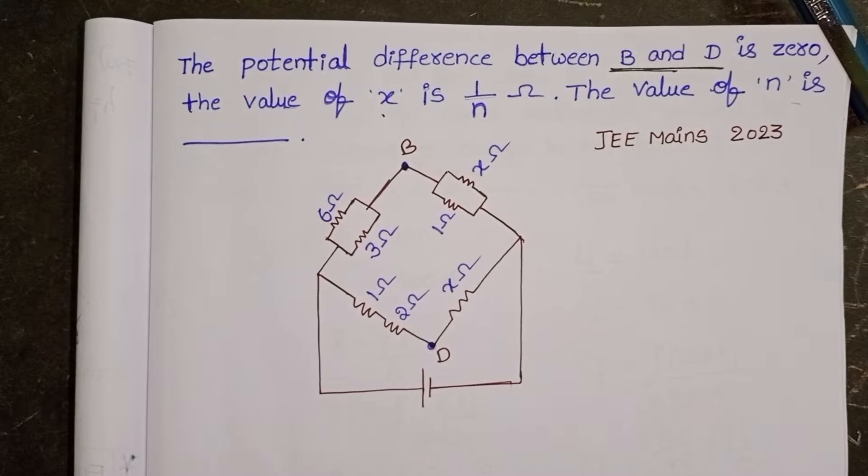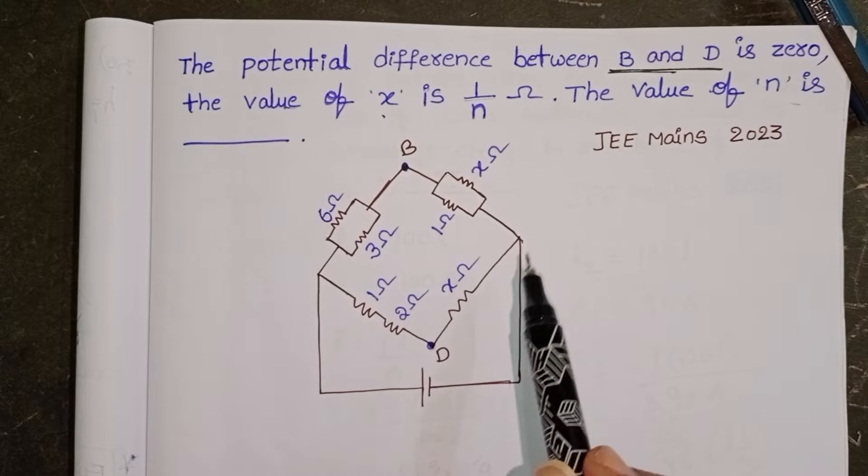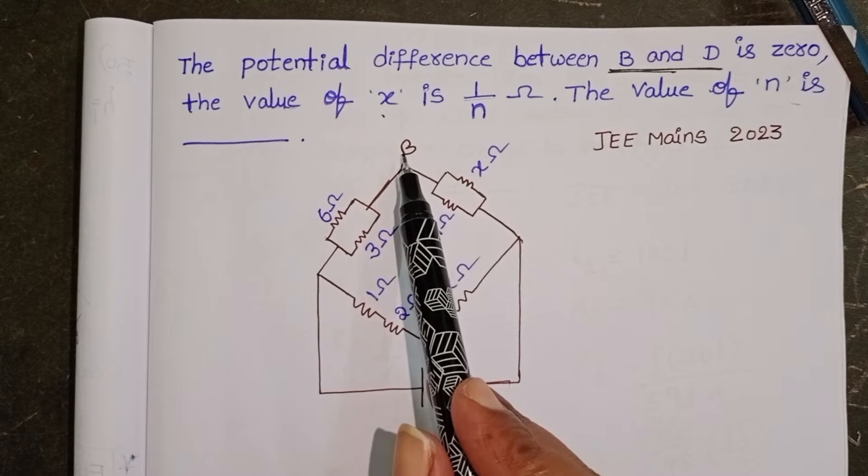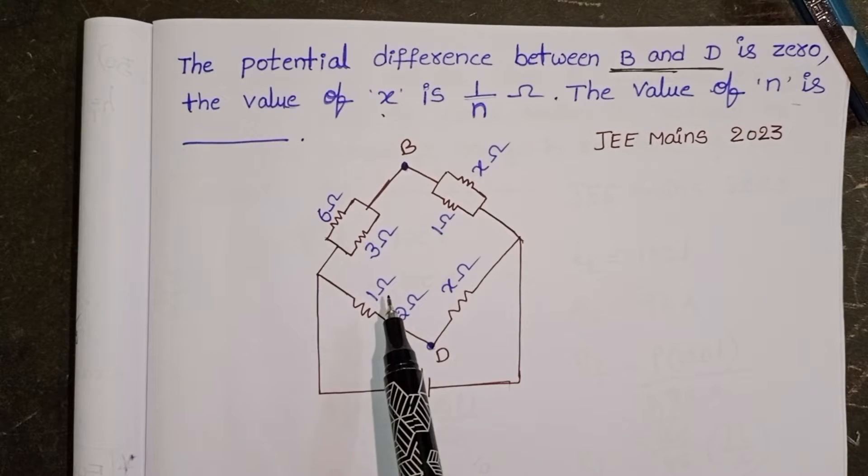This is the given diagram. The potential difference between B and D is zero, so there is no flow of electric current through these two points. Now observe the diagram carefully.